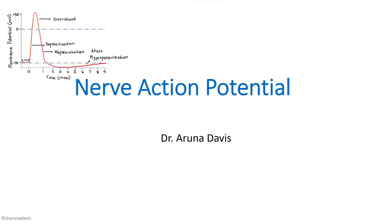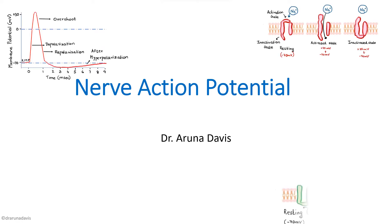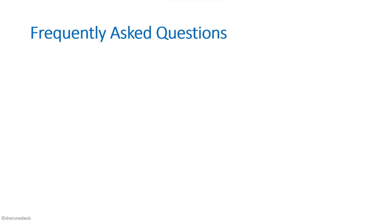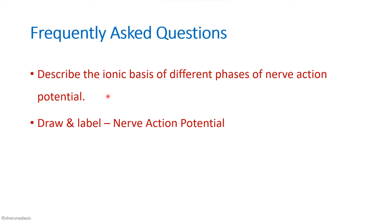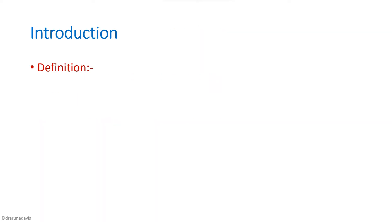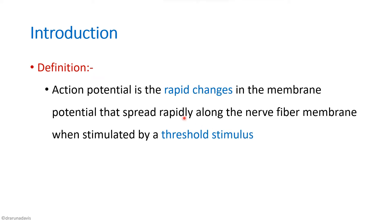In this video we are going to see about nerve action potential. The frequently asked questions from this part are: describe the ionic basis of different phases of nerve action potential, and draw and label a nerve action potential. An action potential is the rapid changes in the membrane potential that spreads rapidly along a nerve fiber membrane when stimulated by a threshold stimulus.